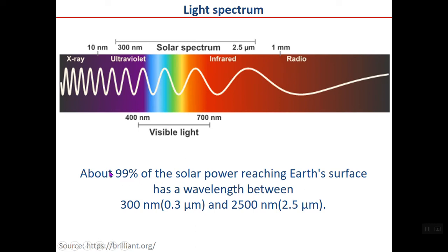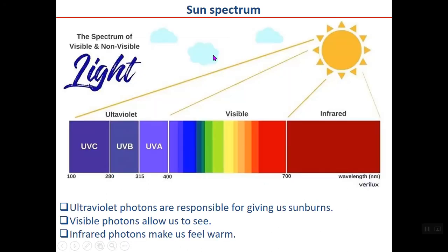There is also about one percent from other rays, but the main part of the solar spectrum is comprised of UV (ultraviolet), visible, and infrared. UV photons — which can be divided into A, B, and C — are responsible for giving us sunburns. Visible photons allow us to see objects, and infrared photons make us feel warm.